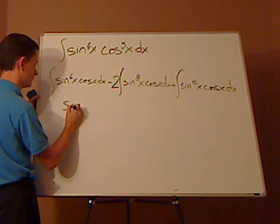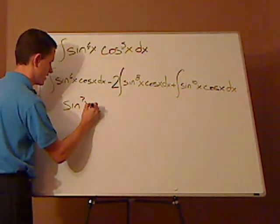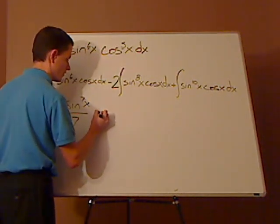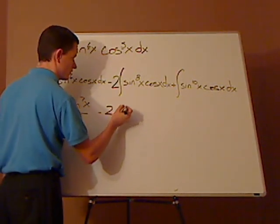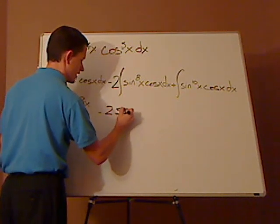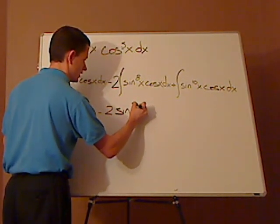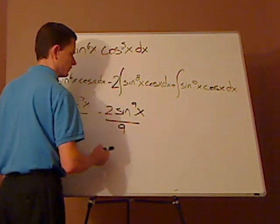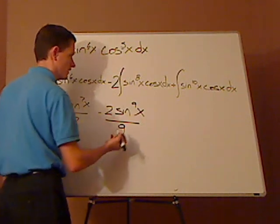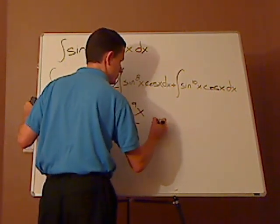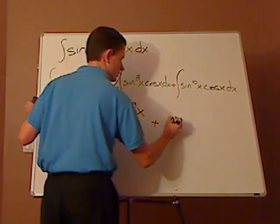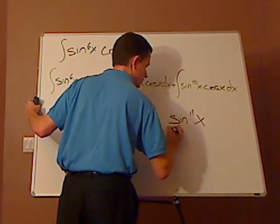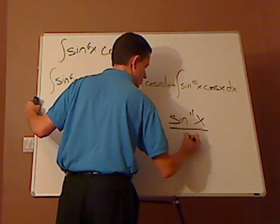So it's sine to the 7th x over 7, you have that minus 2, so that's sine to the 9th x over 9. You would simplify it if you can, or you can't, so you don't have to worry about it.